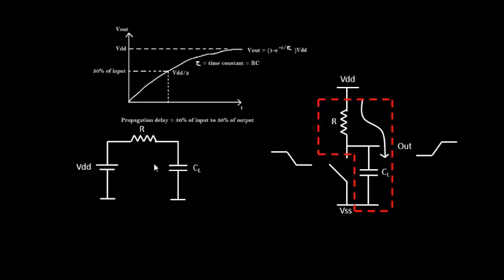From the drain current, we need to find the relationship between drain current and the resistor, because propagation delay is a strong function of resistance — and also of capacitance. This topic needs more discussion, so we will continue it in the next video.